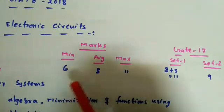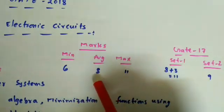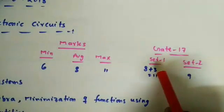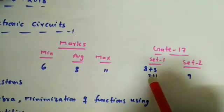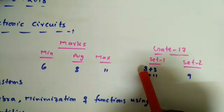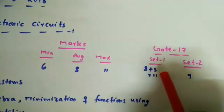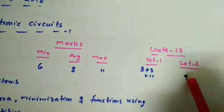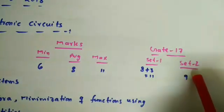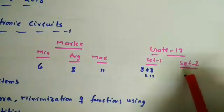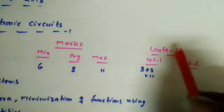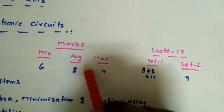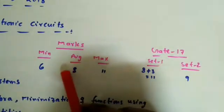This includes digital circuits as well as microprocessors. In GATE 2017 Set 1, we got 11 marks — eight from digital electronic circuits and three from microprocessors. In Set 2, we got nine marks from digital circuits alone. So the average is eight marks.